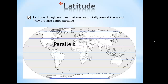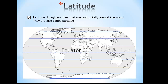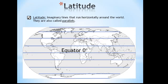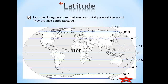Lines of latitude measure a location's direction and distance from the equator. A location's distance from the equator is measured in degrees. The equator is the zero-degree line and divides the Earth into northern and southern hemispheres. There is 90 degrees of distance both north and south of the equator. For example, the north pole is 90 degrees north of the equator, while the south pole is 90 degrees south of the equator. All locations on Earth will fall somewhere between zero and 90 degrees latitude.